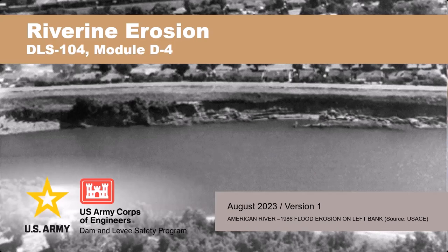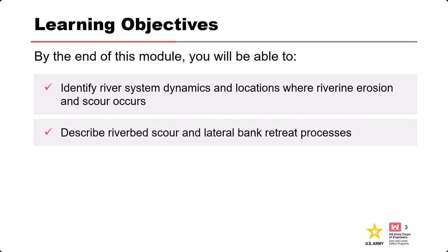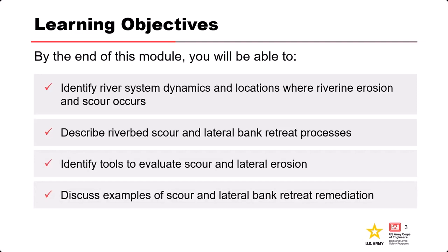This is a great photo from 1986 showing a flood event. The learning objectives for this session: you'll be able to identify river system dynamics, locations where riverine erosion and scour occurred, understand riverbed scour and lateral bank retreat processes, identify tools to evaluate scour and lateral erosion, and discuss examples of scour and lateral bank retreat remediation.